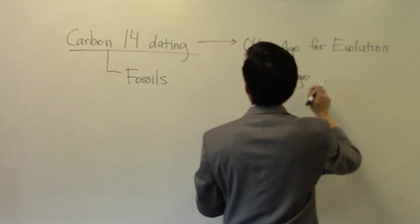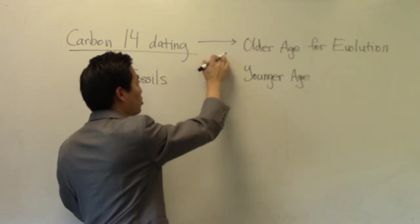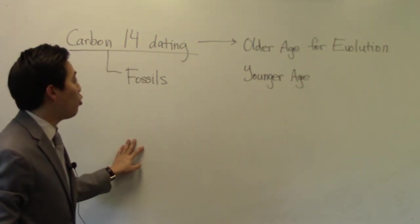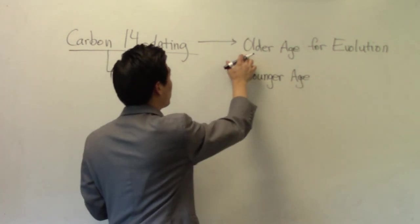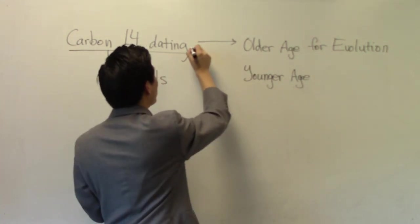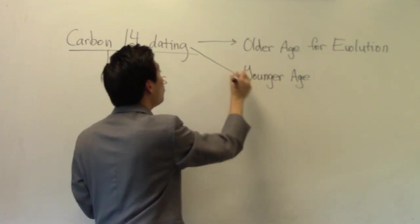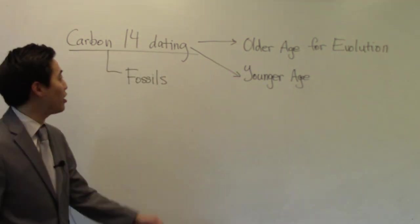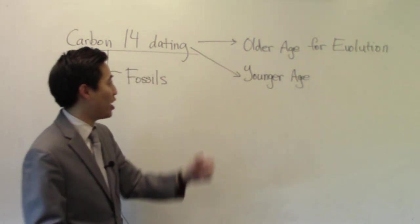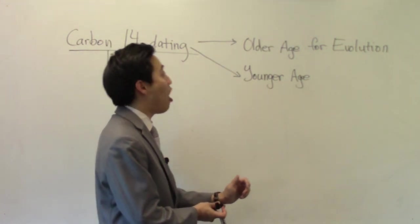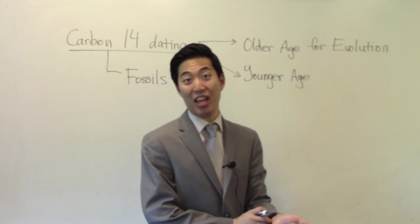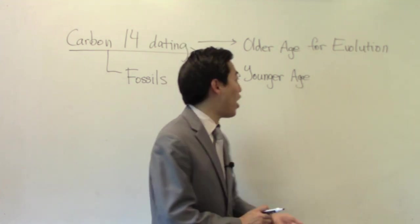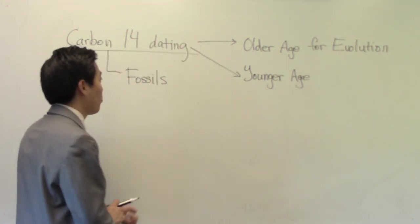Now what we're gonna prove is that carbon-14 dating is not gonna prove an older age for evolution, it's actually going to prove a younger age. I know the arguments against certain fossils when they pull up older age, but we're gonna use this to prove younger age. If they were really honest with carbon-14 dating, not picking and choosing like they've always done, then you can find an absolute younger age.